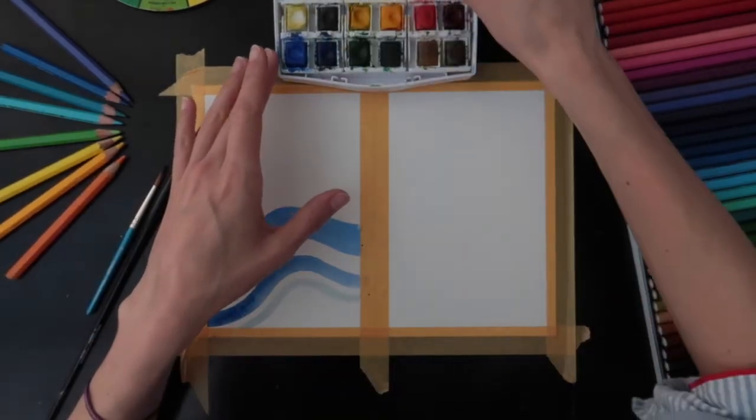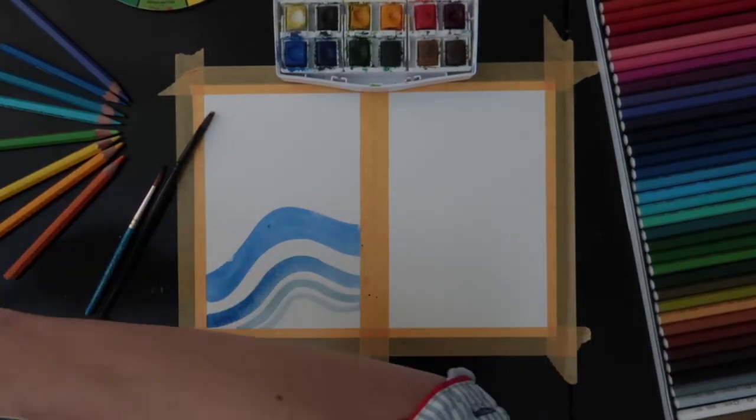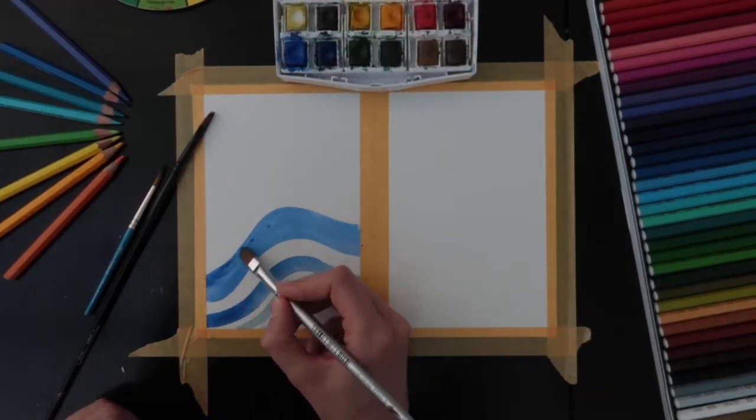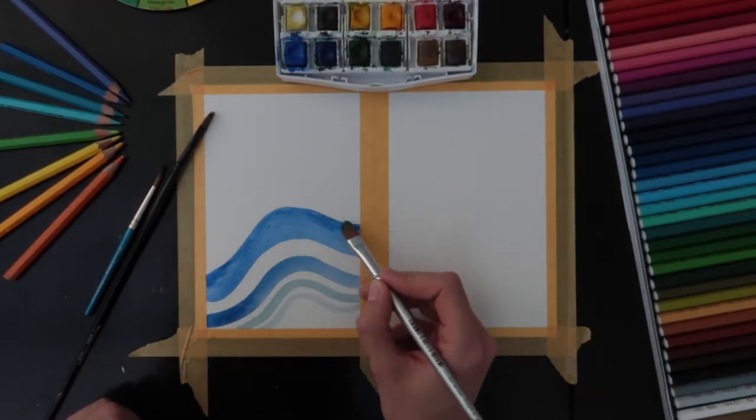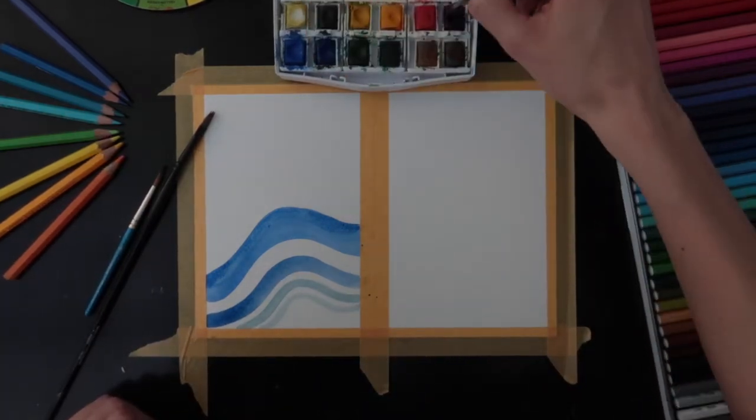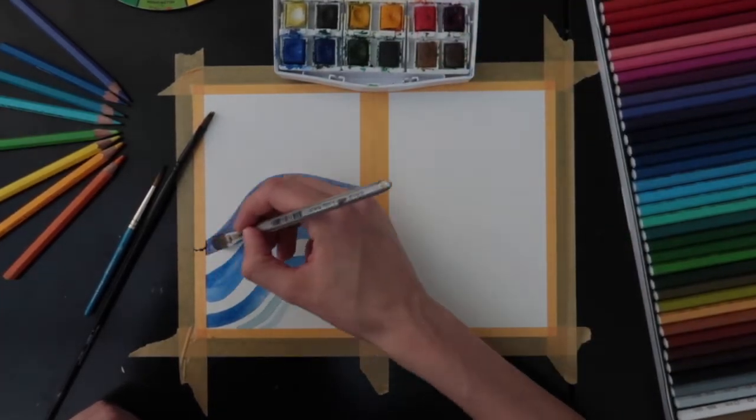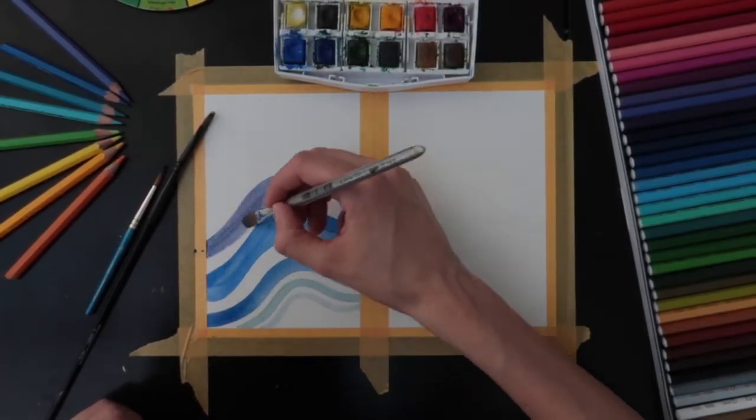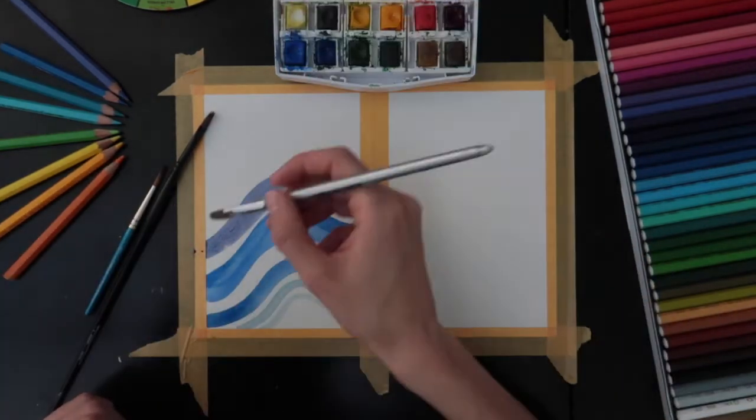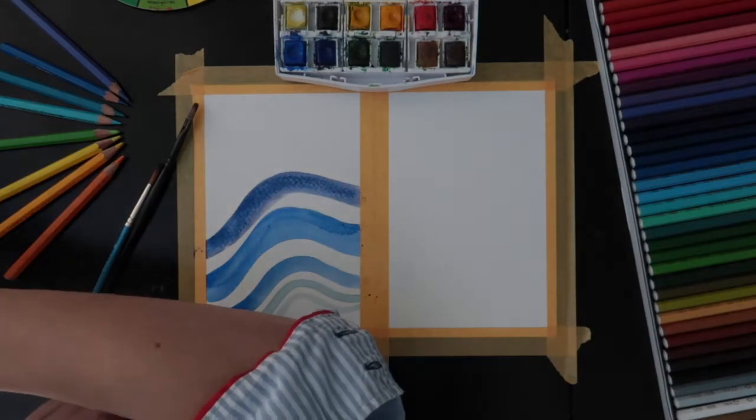It would be nice to keep one movement on the left for the cool color and a different one when we're going to use the warm colors. When we're thinking about cool colors, they are all of the blues, some of the greens, and you can even use some of the purples that got more blue than red like the one I'm using right now.